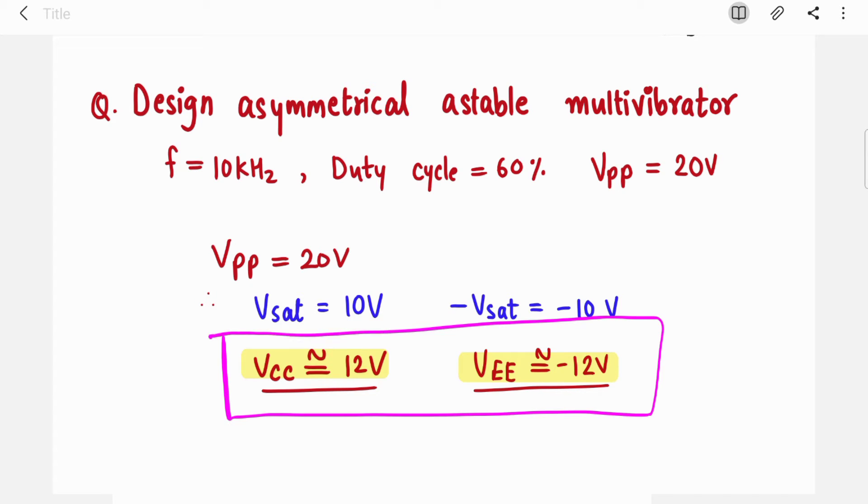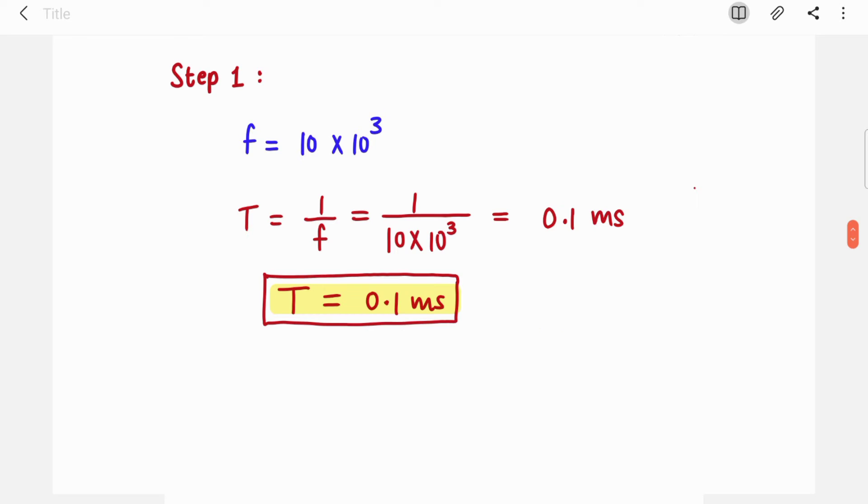Now we have to deal with the frequency and duty cycle. Step one: frequency is 10 kilohertz, we will find out time period. Just take inverse 1 upon f, it will be 0.1 millisecond. Your time period of output voltage is 0.1 millisecond.